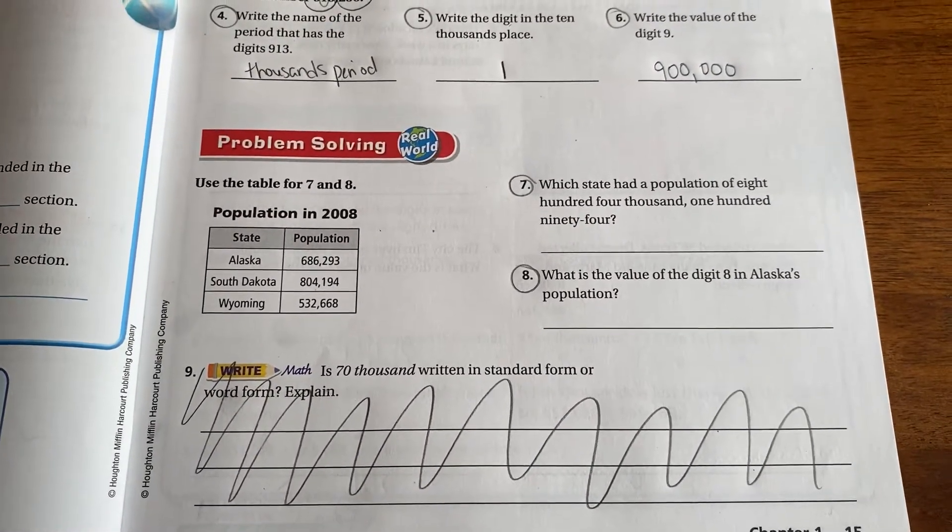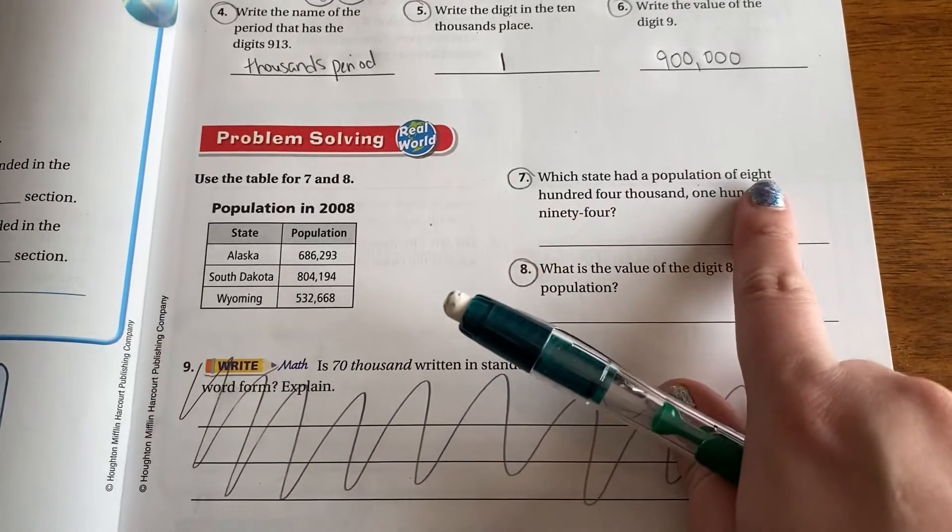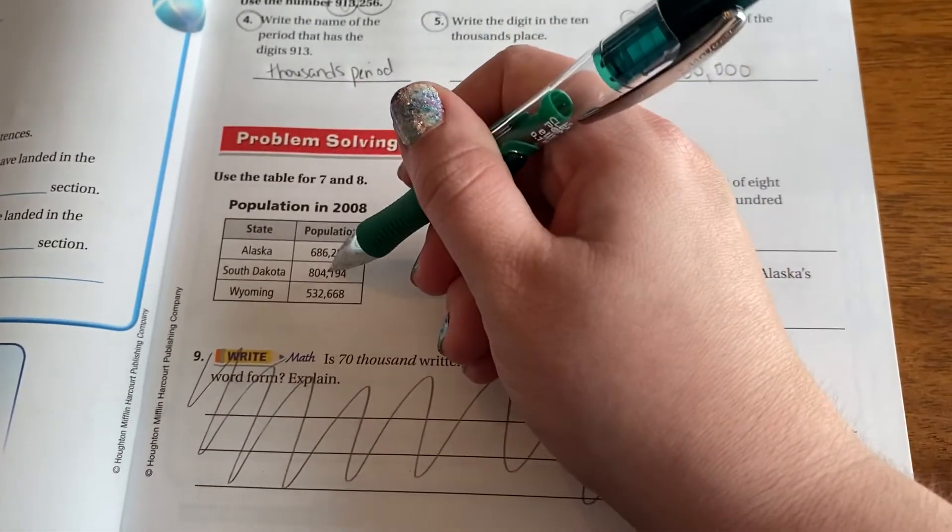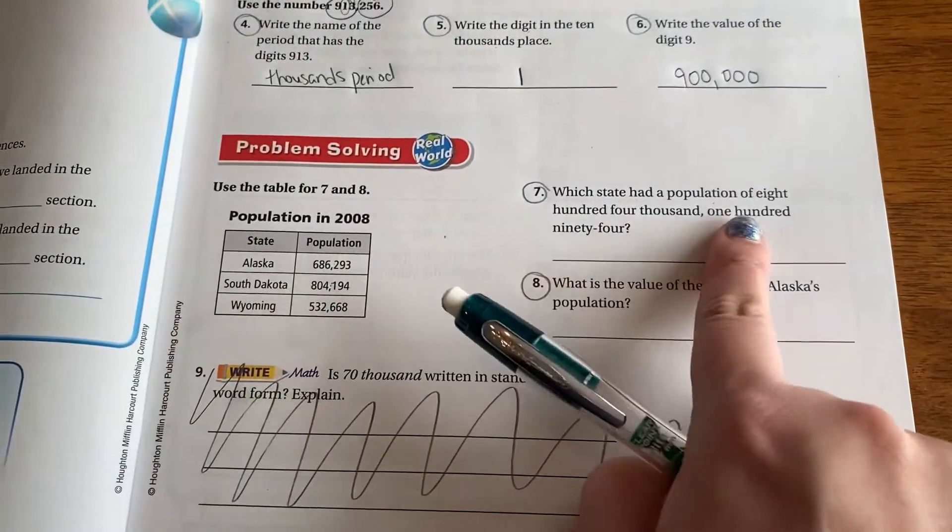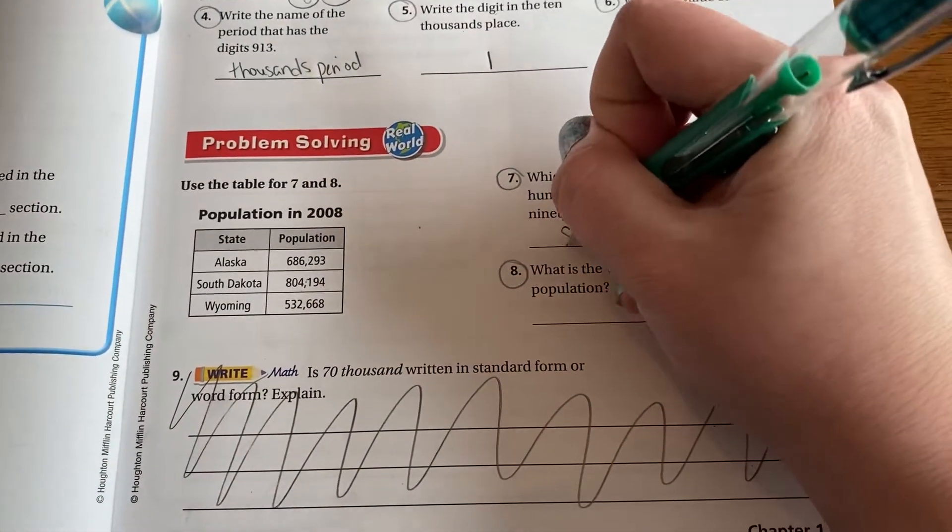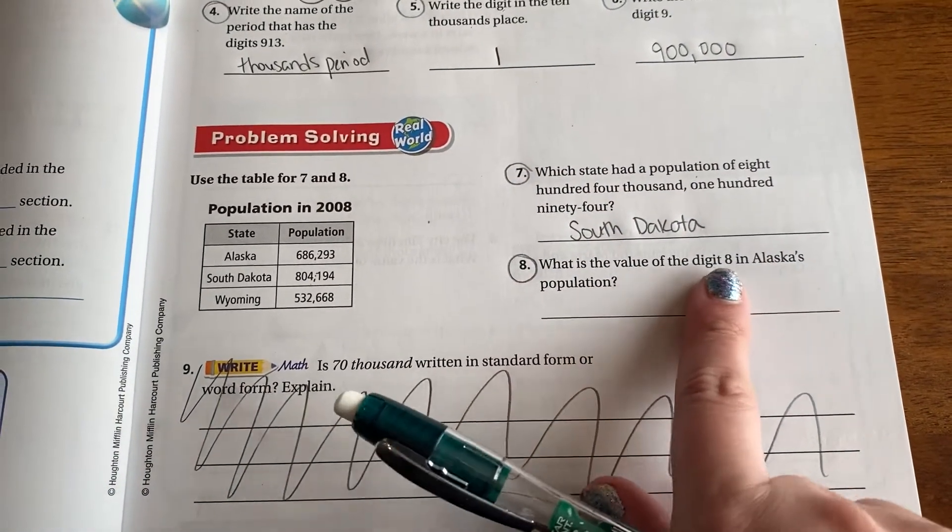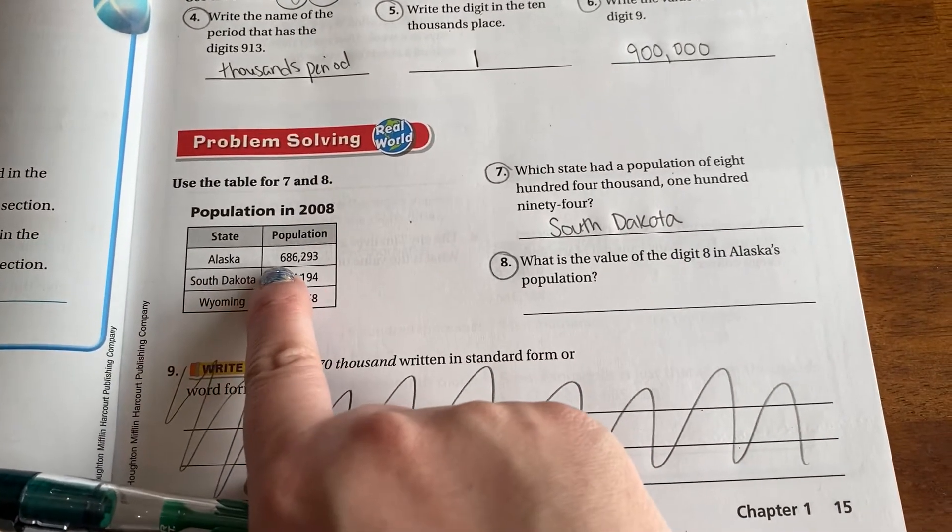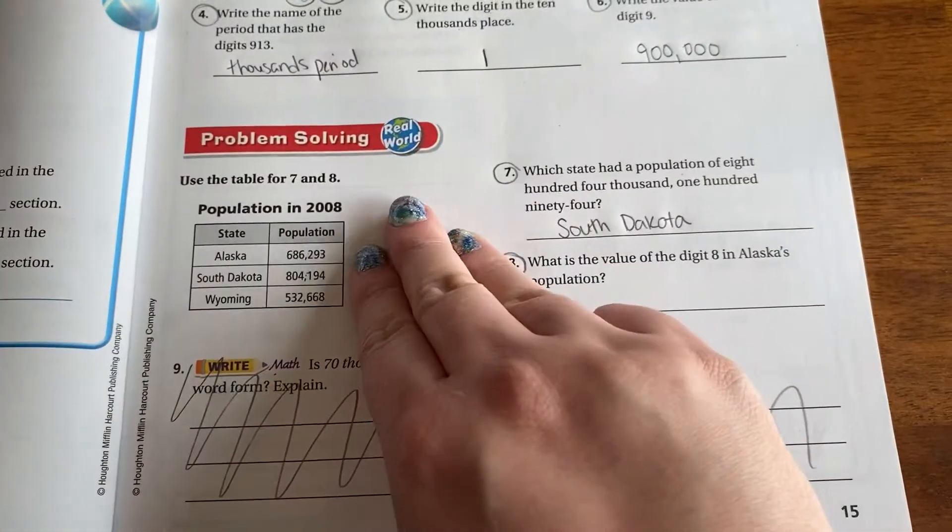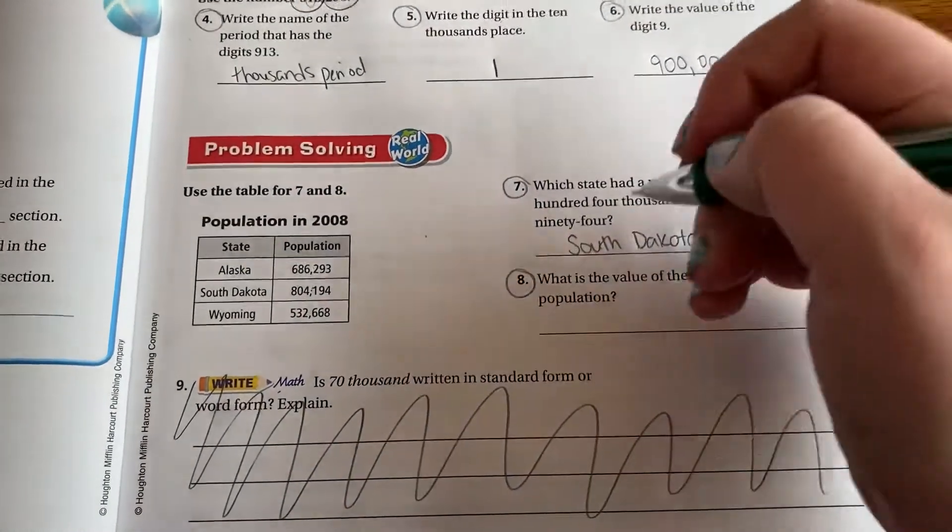Which state had a population of 804,194? So we're going to use the table for these two questions. So I'm trying to find which number matches this word form. 804,000. I'm going to start there. Well, this is 600 something thousand. This is 500 something thousand. This one is the 804,194. Matching. So I'm going to put South Dakota is my answer. What is the value of the digit 8 in Alaska's population? So I'm going to look at Alaska. The 8 is in the 10 thousands place. So if I have 8 10 thousands, that's 80,000. 8 groups of 10,000 is 80,000.